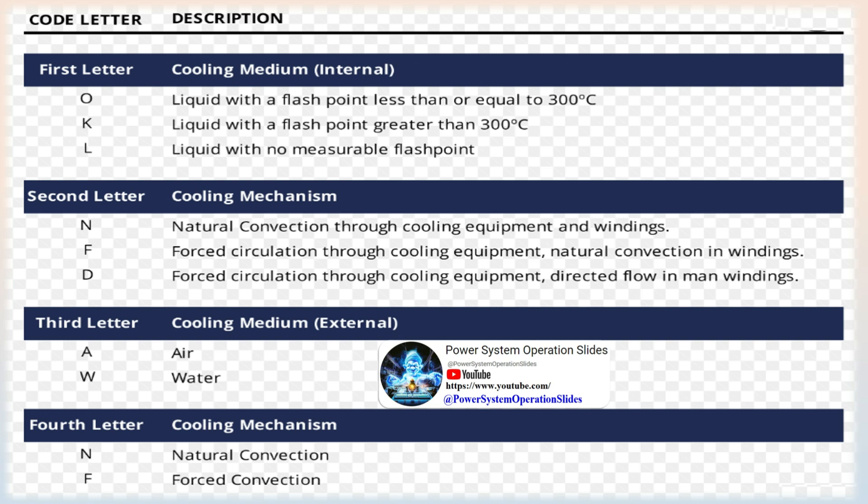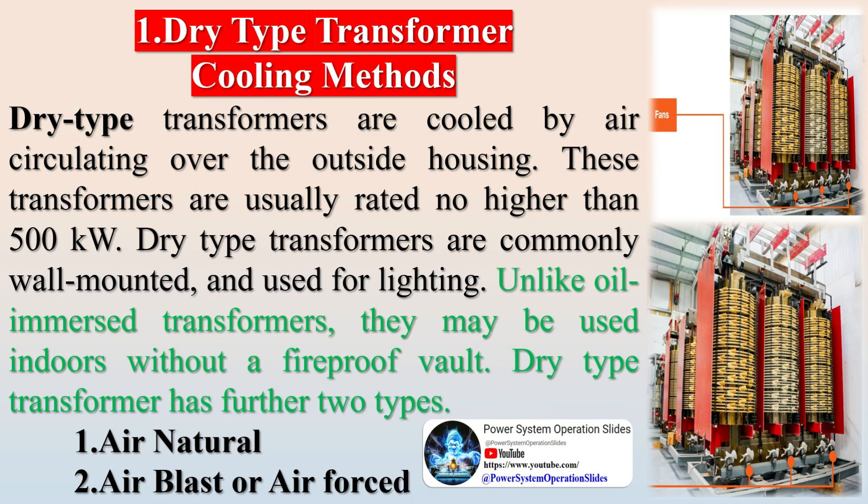Air Natural (AN) cooling is used in dry type, self-cooled transformers. In this method, the natural circulation of surrounding air is used for cooling the transformer. The windings of the transformer are protected against mechanical damage by a sheet metal enclosure. Air Natural cooling is used for low voltage, small transformers up to a few kVA.